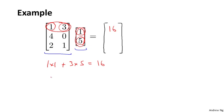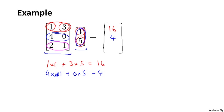Then for the second element, I'm going to take the second row and multiply by this vector. So I have 4 times 1 plus 0 times 5, which is equal to 4. So I get a 4 there. And finally, for the last one, I have 2 times 1 plus 1 times 5, which is equal to 7. And so I get a 7 over there.